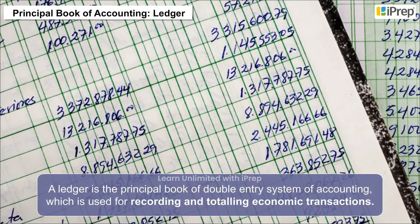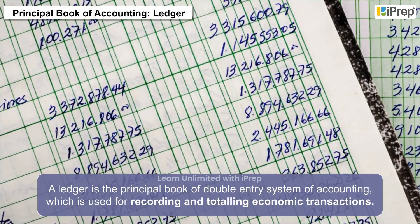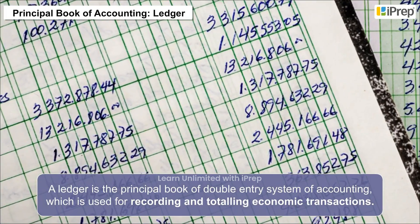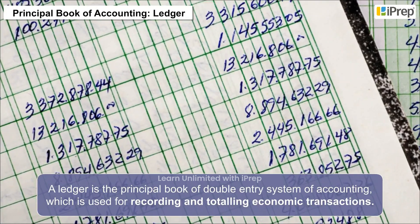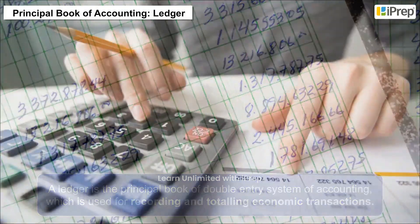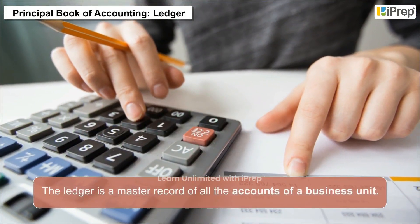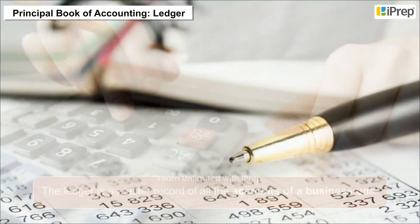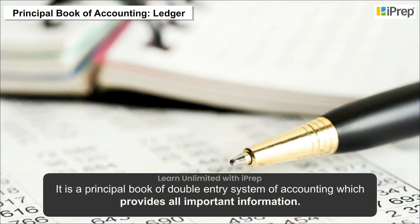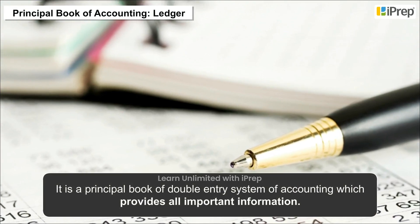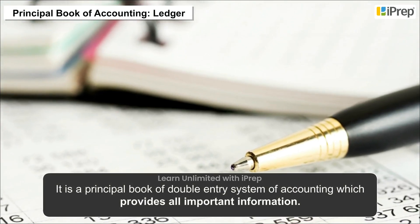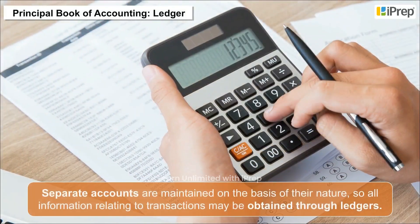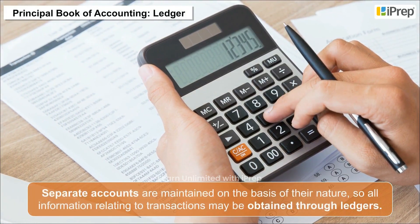A ledger is the principal book of the double entry system of accounting, which is used for recording and totaling economic transactions. It is a master record of all the accounts of a business unit, providing all important information. Separate accounts are maintained on the basis of their nature.